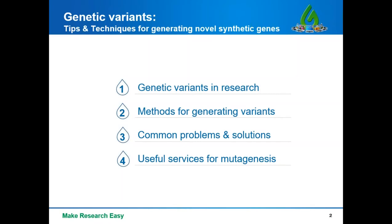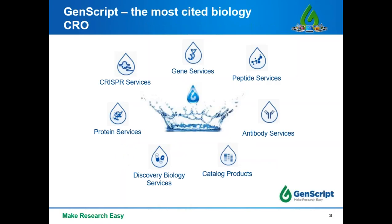Before I begin, let me quickly go over the topics I'll be covering. First, I'll present a quick overview of genetic variants — what they are, their significance in health and disease, and their experimental significance in the lab. Second, I'll present some popular methods for generating variants experimentally along with their advantages and disadvantages. Third, I'll cover common problems and solutions for variant synthesis. Finally, I'll describe some of the services we offer here at GenScript for your mutagenesis projects.